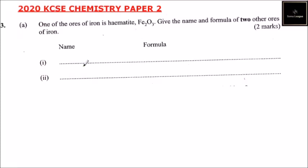Question number three, part A. One of the ores of iron is Haematite, Fe2O3. Give the name and formula of two other ores of iron. So the first one is Siderite, and the formula is FeCO3.